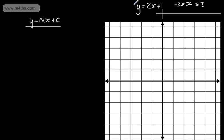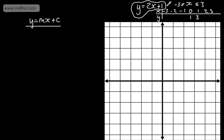So we'll have values of x from negative 3 to positive 3: -3, -2, -1, 0, 1, 2, and 3. We substitute the values in for x. Starting at 0: 2 lots of 0 plus 1 gives 1. When x = 1: 2 lots of 1 is 2, plus 1 gives 3. When x = 2: 2 lots of 2 is 4, plus 1 is 5. You might notice this is increasing by 2 each time — that's the gradient. The next value is 7, and working backwards we get -1, -3, and -5.